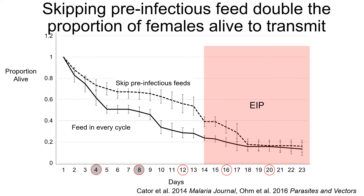If you feed this sort of information through models, you quickly get large changes in the number of infectious bites you'd expect a population to be able to deliver. As I mentioned before, these sorts of changes in behavior — predicted to increase the probability of transmission — are observed across a wide range of vector-parasite combinations.